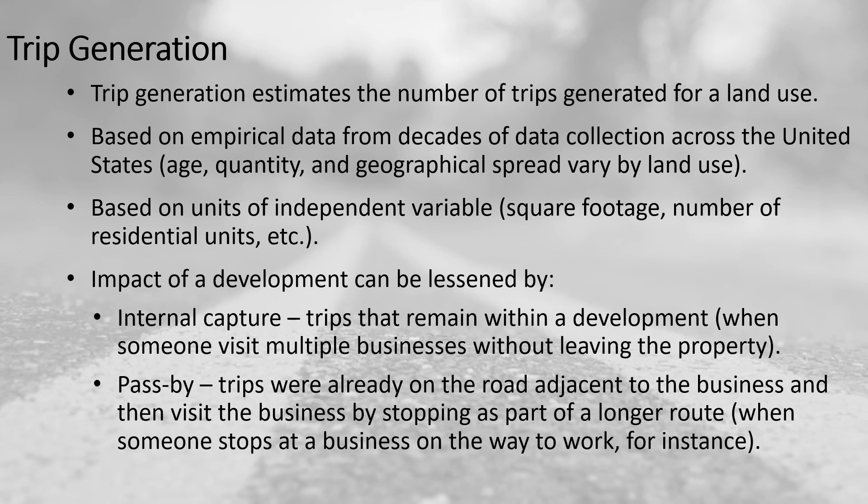Another way to lessen the impact of a development is by looking at pass-by trips. Certain types of businesses are more likely to generate pass-by trips — trips that are already on the road adjacent to the business, where someone stops in as part of a longer route. Gas stations commonly have high pass-by trip percentages, as many people stop on their way somewhere else. Really the main impact is just the turning movement in and out. Coffee shops and fast food restaurants are other examples with high pass-by trip percentages.